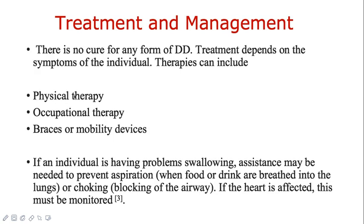The treatment procedures employed in distal dystrophy include three common types of therapies: physical therapy, occupational therapy, and mobility devices or braces implantation. If a person has problems during swallowing or choking, assistance is required to prevent aspiration. If the heart is affected, the patient should be monitored.